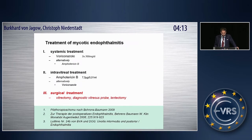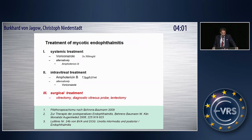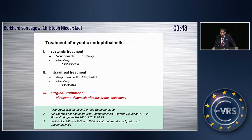The current treatment suggestions, at least in Germany, are a combined therapy: systemic treatment with voriconazole or amphotericin B, combined with intravitreal treatment with amphotericin B or voriconazole. I am very much a partisan of surgical treatment to reduce the infectious burden and to obtain a diagnostic vitreous probe.